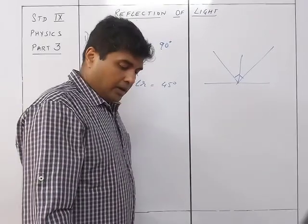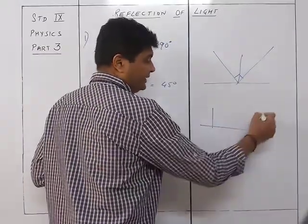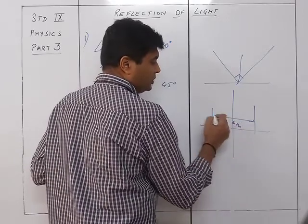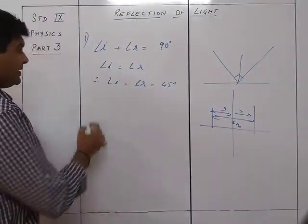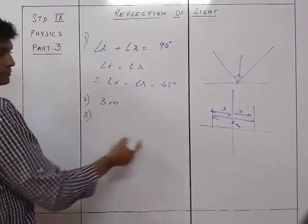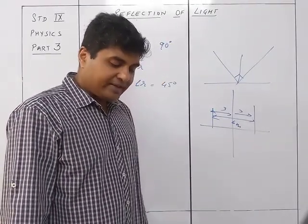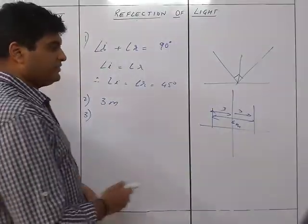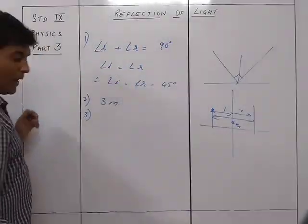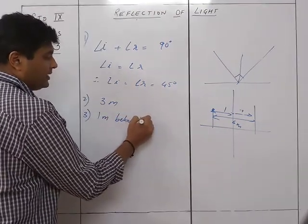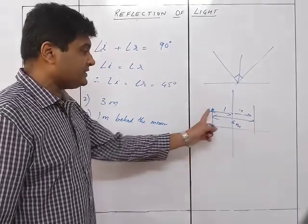Second numerical: What is the distance of a man from the mirror? The answer is 3 meters on each side — very simple. Third: an insect is sitting in front of a plane mirror at a distance of 1 meter from it. The image is formed 1 meter behind the mirror. The distance between the insect and its image is 1 + 1 = 2 meters.